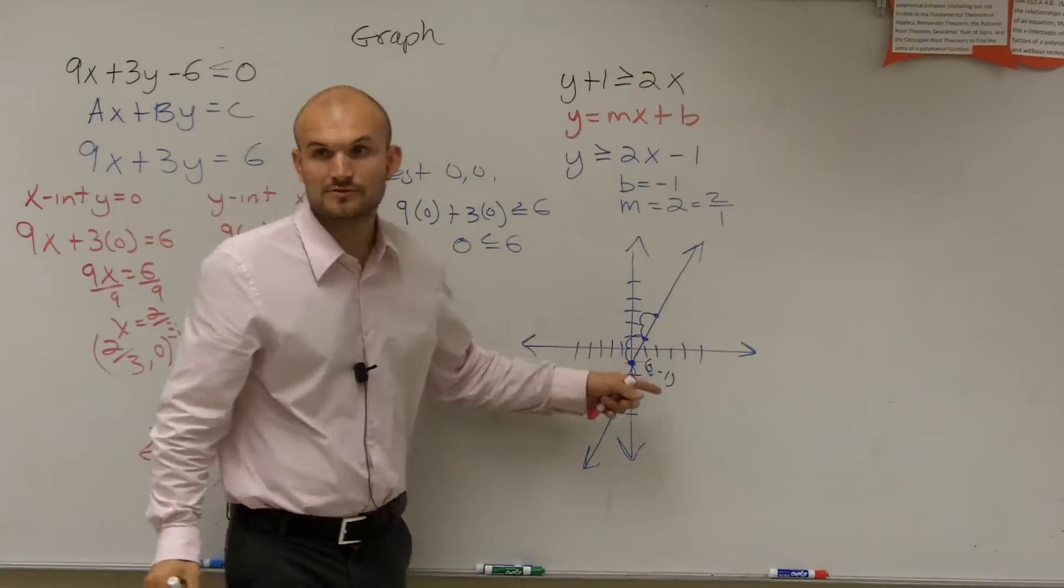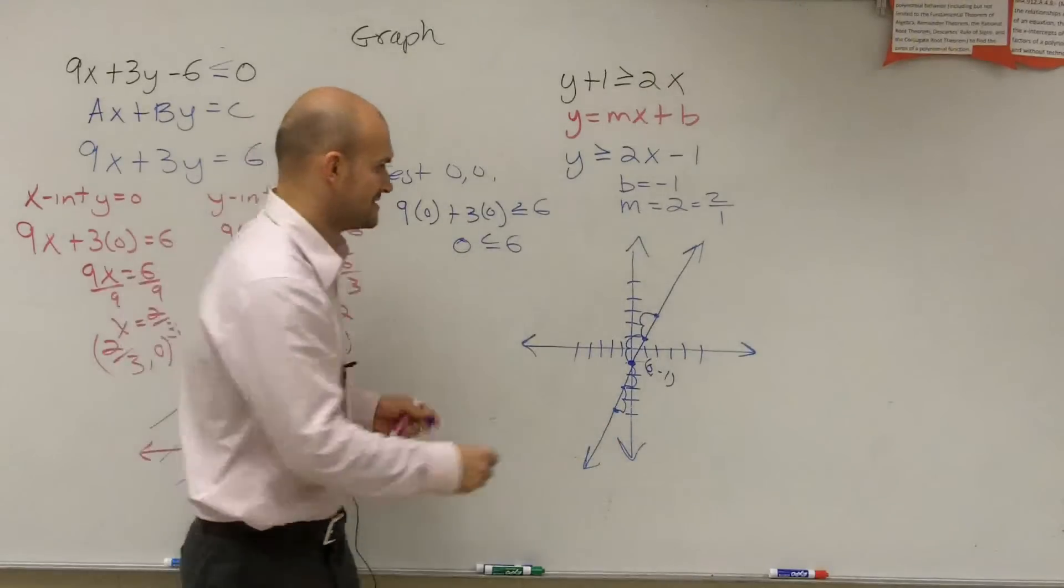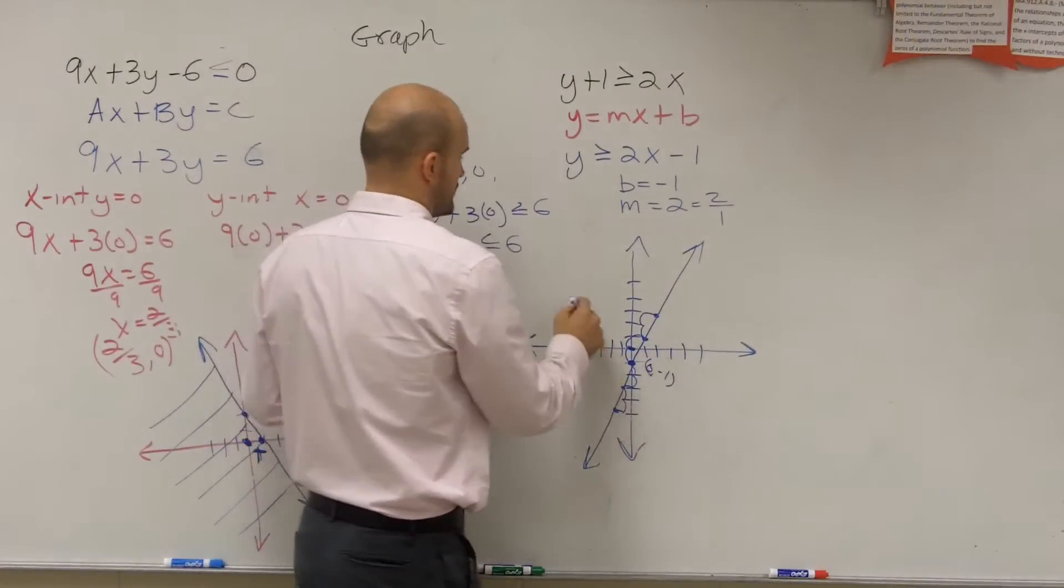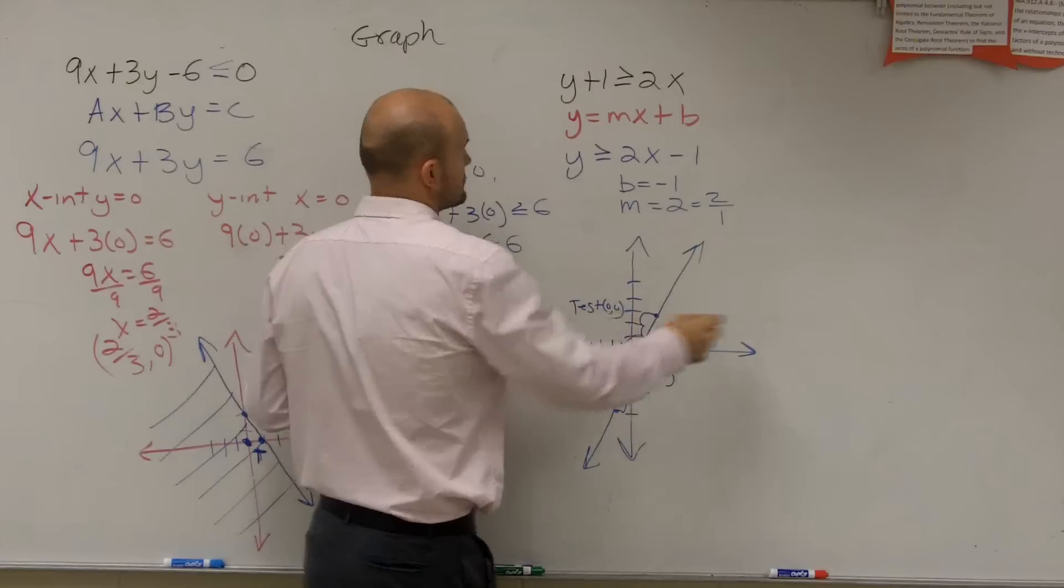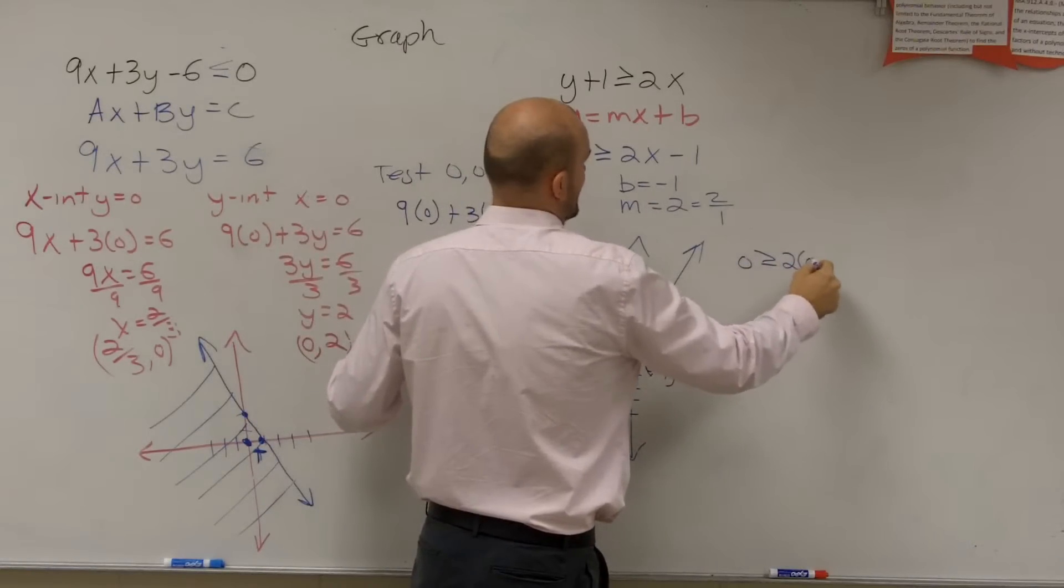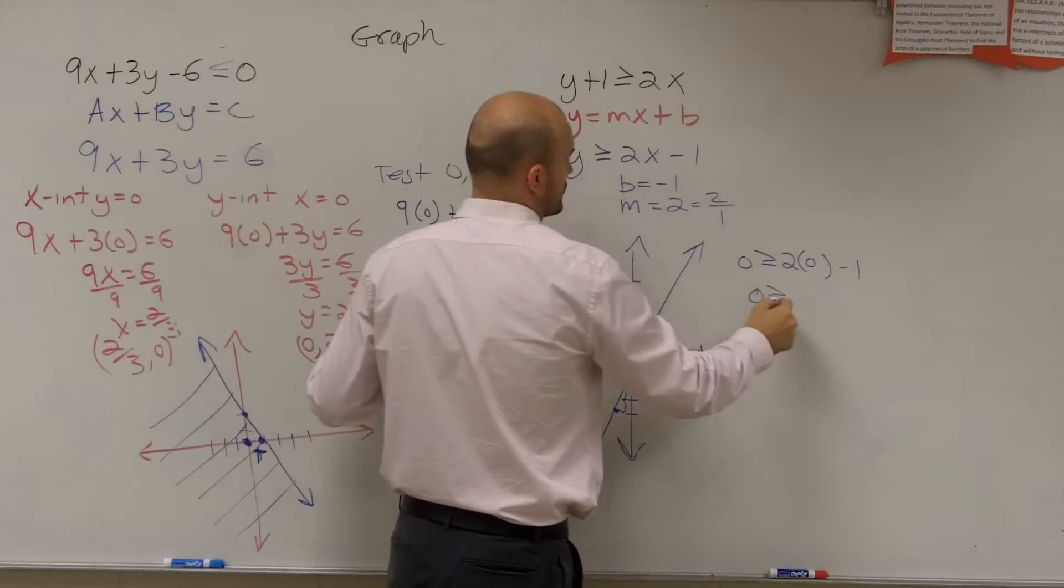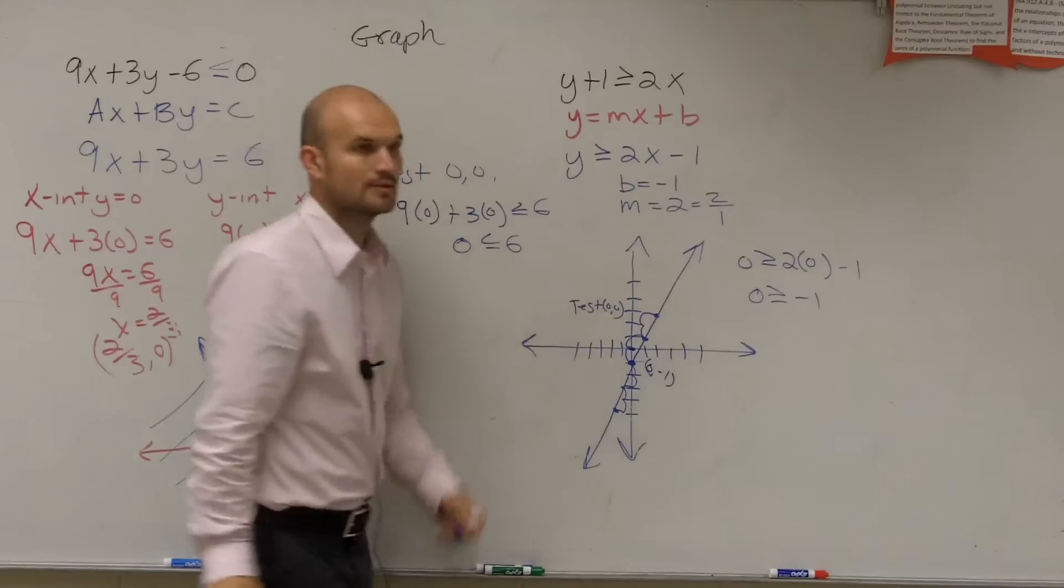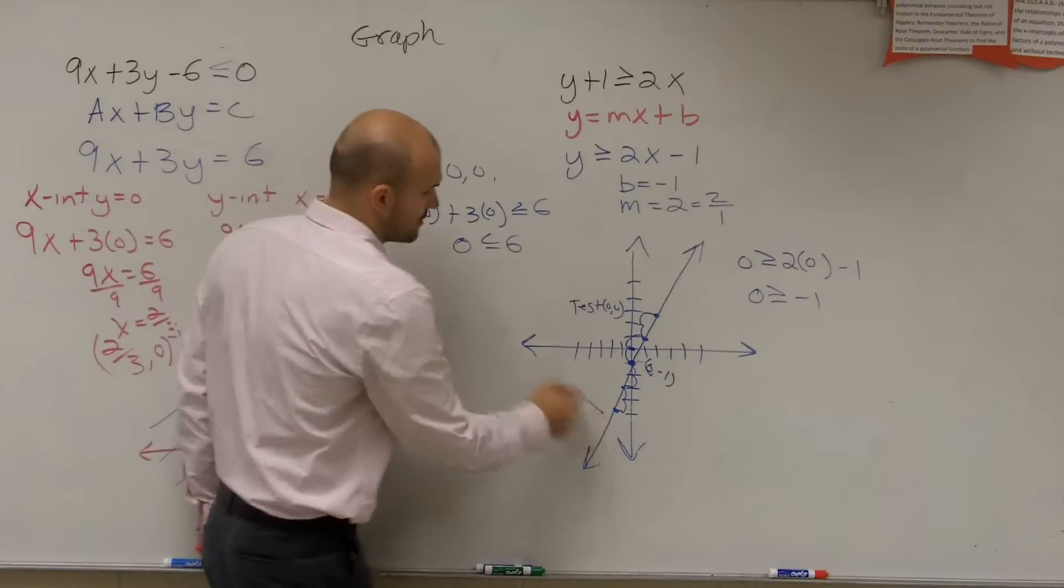Now, does my line go through zero, zero? No. So let's test it. We're going to test zero comma zero. So I put a zero in for the y and a zero for the x. Is zero greater than or equal to negative 1? Yep. That one's true again. So we're going to shade where it's true.